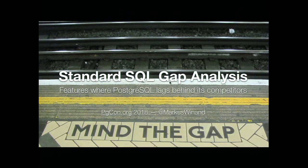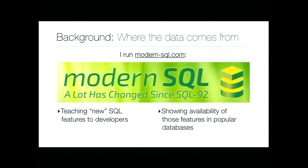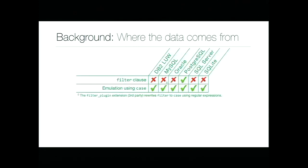The exercise in this gap analysis was to find the gaps. Where does this data come from? I run a website called modernsql.com. The aim of that webpage is to teach new SQL features to developers — where 'new' means pretty much everything released after SQL 92. I also want to make visible to developers which database supports these features, and that's where this data comes from. On modernsql.com you'll see matrices like this.